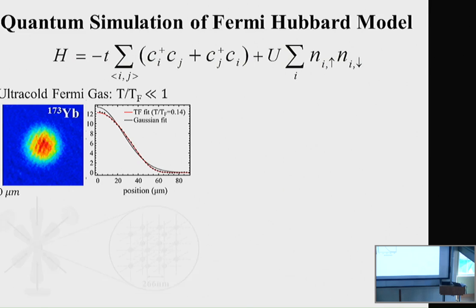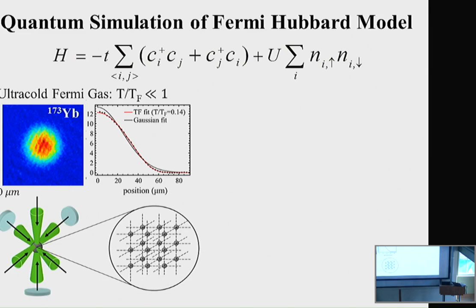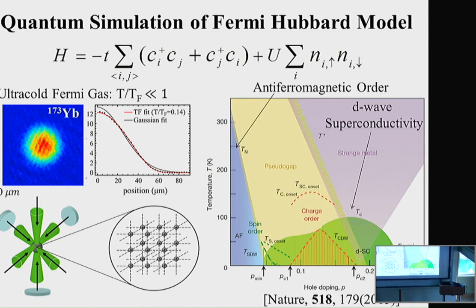By loading this ultracold Fermi gas into an optical lattice, we can successfully implement the Fermi-Hubbard model. One of the important goals of such quantum simulation research is to get deeper insight into the behavior of the strongly correlated electron system of high-Tc cuprates.